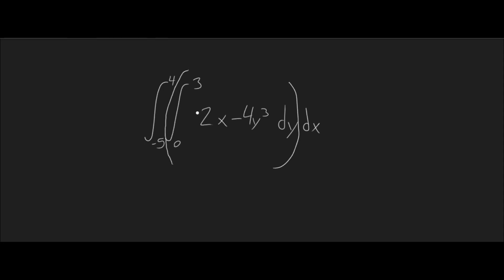So, what's the integral of 2x with respect to y? That would be 2xy. Since we're treating the x as constant. And the integral of minus 4y cubed is minus 4y to the power of 4 over 4. And then these cancel out.